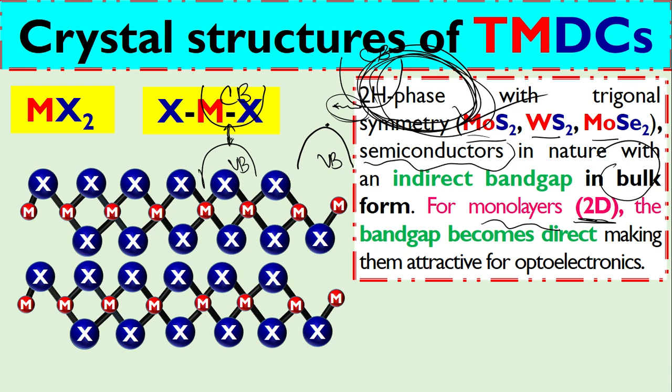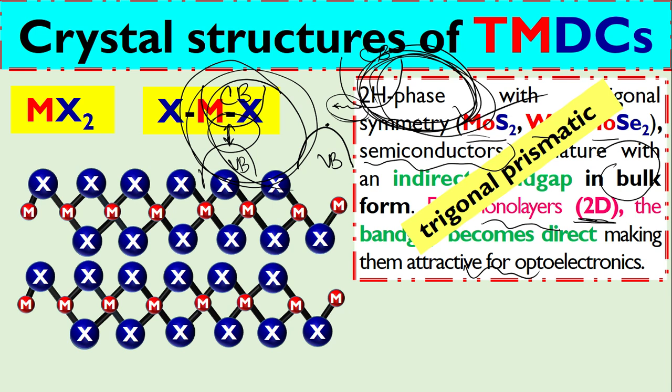This is called direct bandgap material, and this shows very interesting properties, particularly for optoelectronic devices.